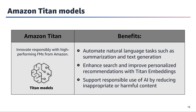Amazon Titan models are advanced foundation models developed by Amazon, designed to facilitate responsible innovation with high-performing natural language processing capabilities. These models excel at automating a wide range of natural language tasks, such as text summarization and generation, enabling efficient content creation and analysis. Furthermore, Titan models offer embedding solutions, known as Titan embeddings, which significantly enhance search functionalities and personalized recommendation systems.